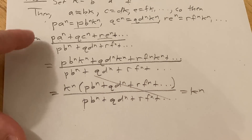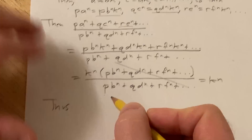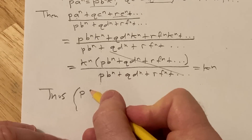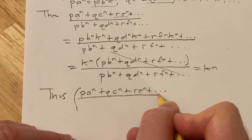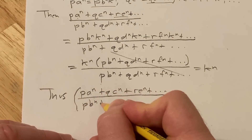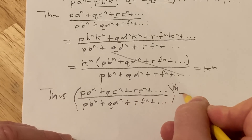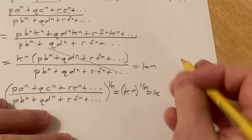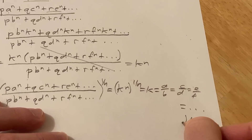We can pull out K^N in the numerator: K^N times (PB^N + QD^N + RF^N), all over (PB^N + QD^N + RF^N). These cancel, leaving K^N. Now we need to take the Nth root — raise this to the 1/N power. So our original expression raised to the 1/N power equals K^N to the 1/N, which equals K. But K equals all of the ratios, as we stated at the beginning. So this equals A over B, which equals C over D, which equals E over F, et cetera. And that completes the proof.